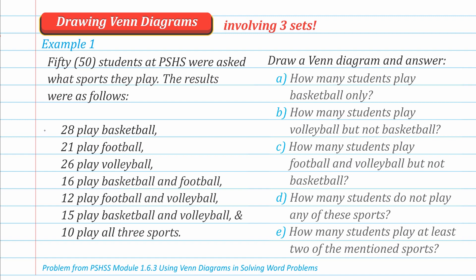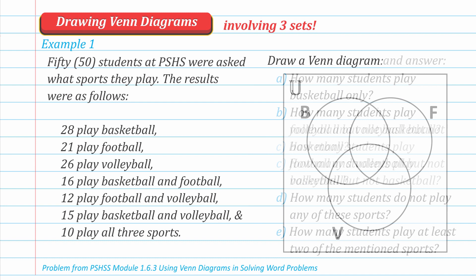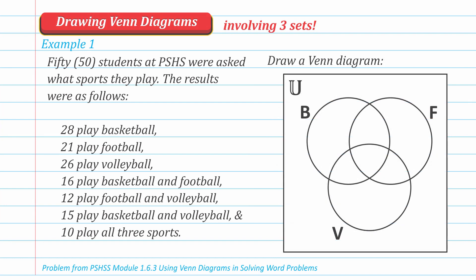We are tasked to draw a Venn diagram to represent the situation and then answer questions afterward. Notice first that we have already provided the universal set, hence the label U — that is the biggest shape in our Venn diagram. Three circles represent set B for basketball players on the upper left, set F for football players on the upper right, and set V for volleyball players below.